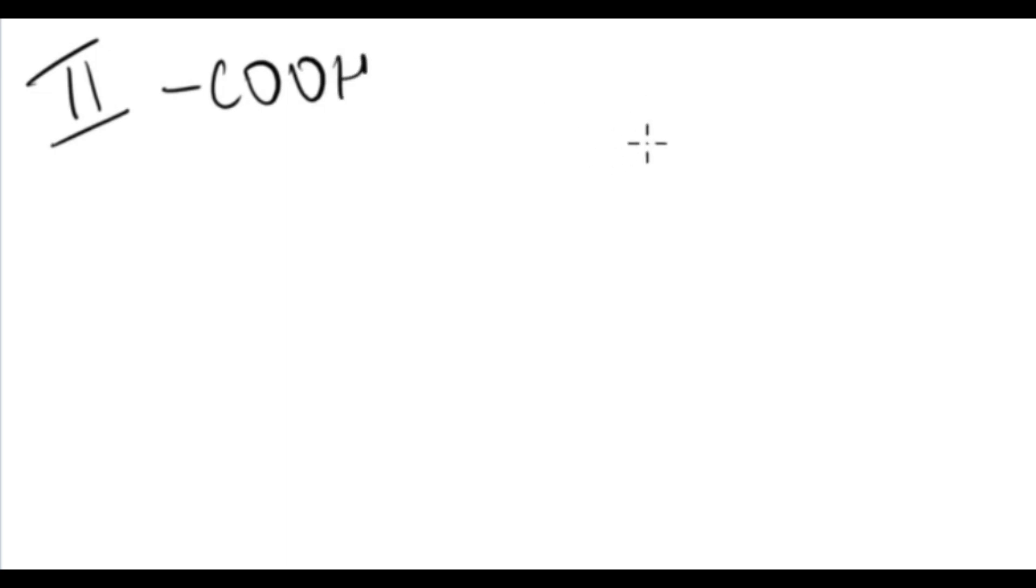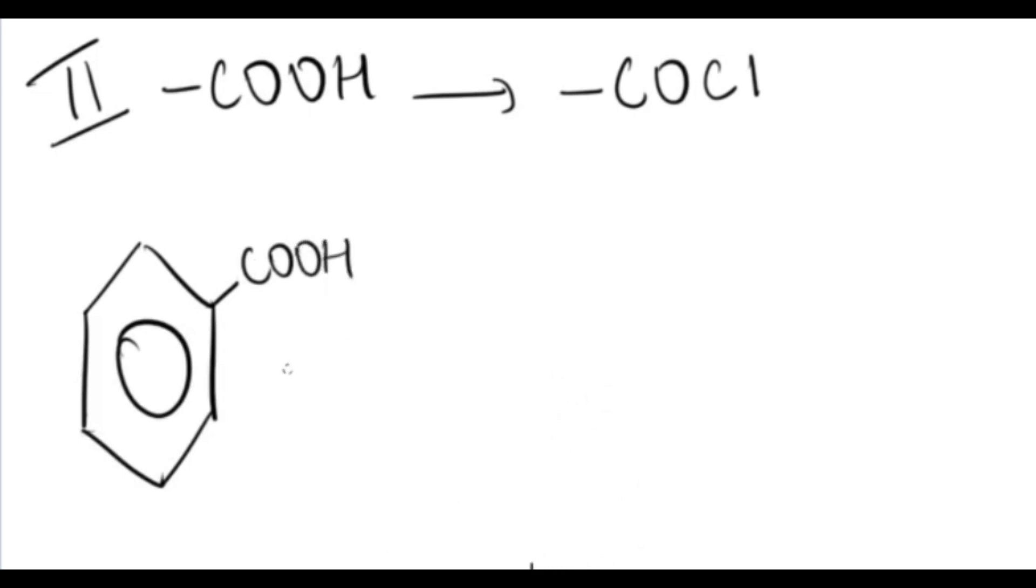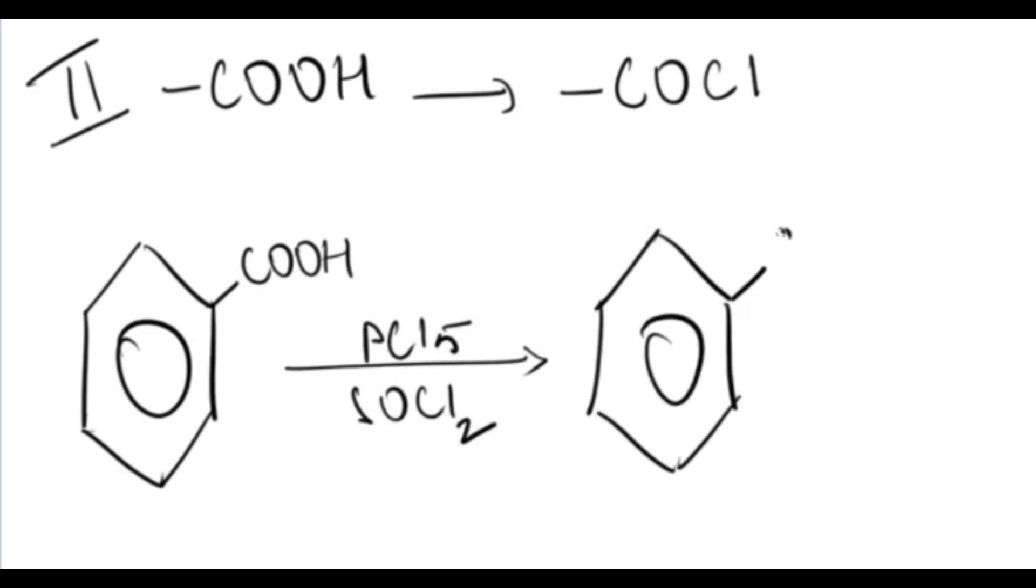Moving on, the second one was the reaction of carboxylic acids with either phosphorus pentachloride or thionyl chloride. So this is the conversion of carboxylic acid to an acyl halide. This is benzoyl chloride. The name of this product is benzoyl chloride and you need to remember that it is very reactive, much more reactive than carboxylic acids.